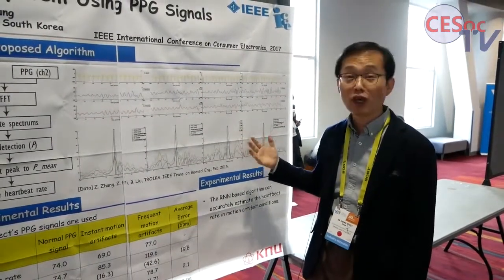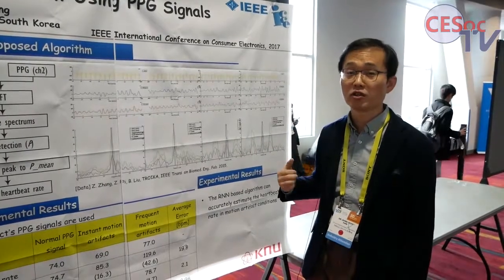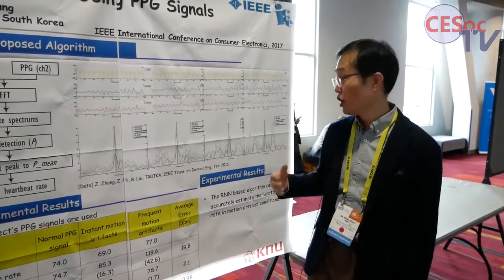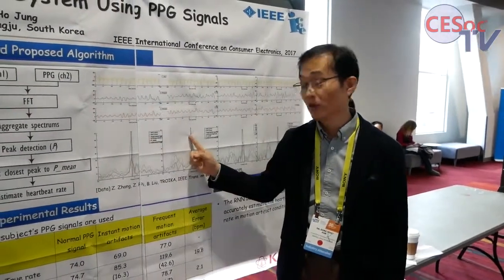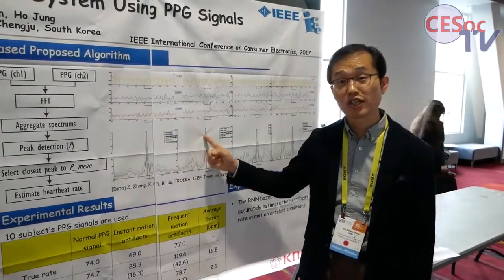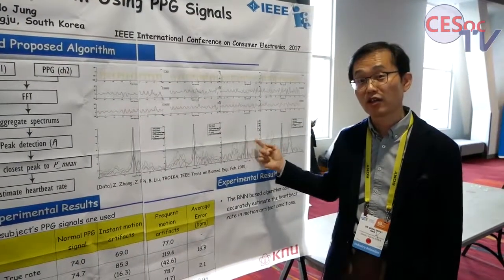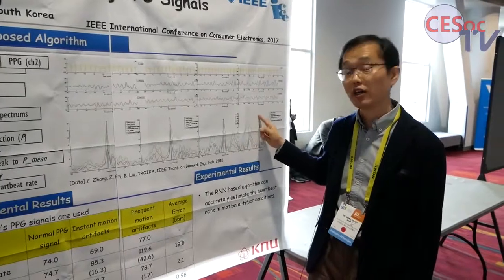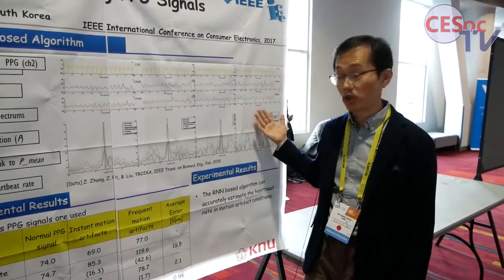That is why we may not be able to obtain the exact heartbeat position. To remove those noise signals, we compare the previously obtained peak positions, and if the difference is too big, we discard those signals. We finally decide this is the real heartbeat rate result.